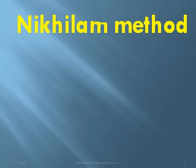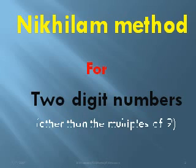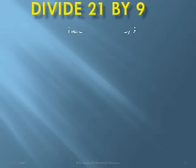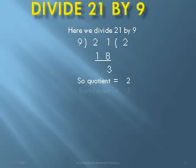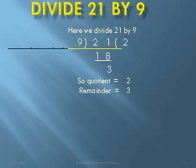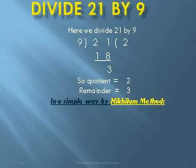Now we see the application of the Nikola method for two-digit numbers other than multiples of 9. We take an example: divide 21 by 9. Using the traditional method, 9 twos are 18, and after subtraction we get 3. So the quotient is 2 and the remainder is 3. Now we do the same division in a simpler way using the Nikola method.